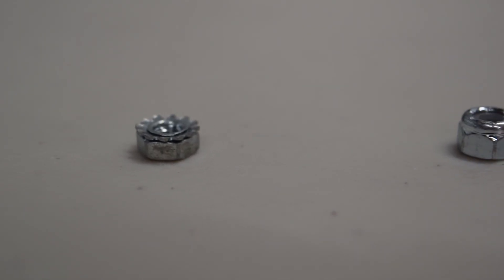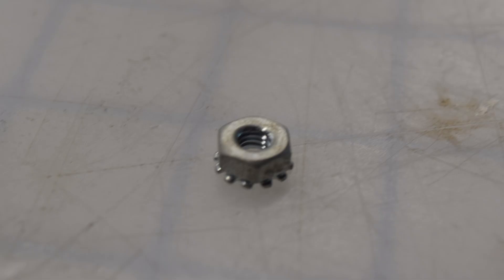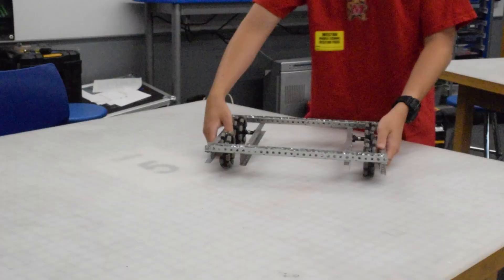We should also talk about the difference between cap nuts and locking nuts. Cap nuts are fine for prototyping, but you'll want locking nuts for the final robot. After a day of competition, you'll find that cap nuts will loosen and fall off.